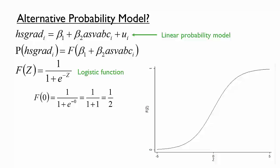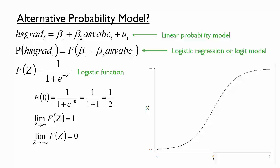You might take a moment to convince yourself that this function fits the bill. If z equals 0, e to the power of 0 is 1, so f(0) equals one half. As z approaches positive infinity, e to the power of negative z approaches 0, so f(z) approaches 1. As z approaches negative infinity, e to the power of negative z approaches infinity, so f(z) approaches 0. As in a linear probability model, the parameters beta1 and beta2 affect the shape of the relationship between ASVAB C and the probability of a high school diploma. The procedure of estimating beta1 and beta2 using data is called a logistic regression, or a logit model for short.